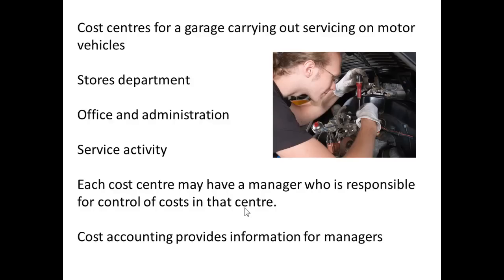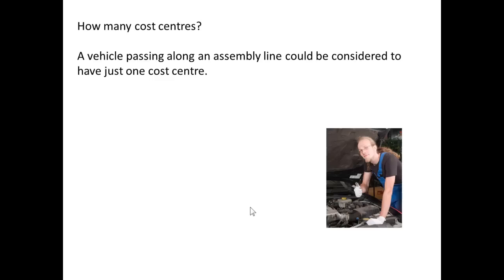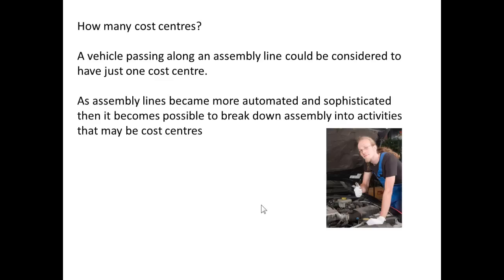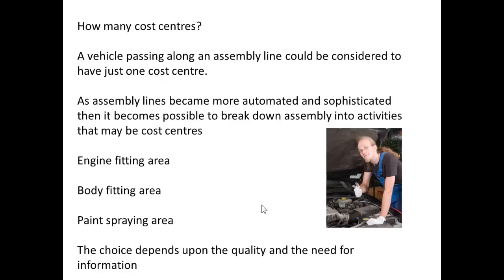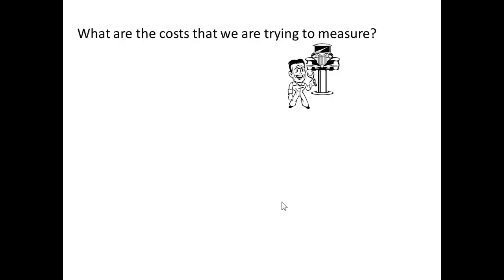Each of those centres will have a manager who is responsible for the control of costs. Cost accounting provides information for managers, and managers can also be held accountable for the costs in their cost centre. How many cost centres do we want? It depends how easy it is to measure a cost centre. Normally an assembly line is a cost centre, but with more and more automation it may be possible to break it down further — engine fitting, body fitting, paint spraying, and so on. What we choose depends on why we need the information and what quality of information we require.